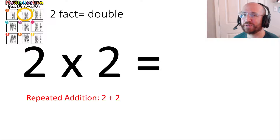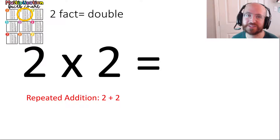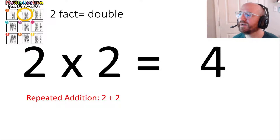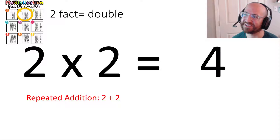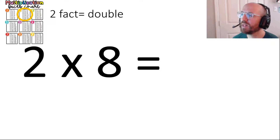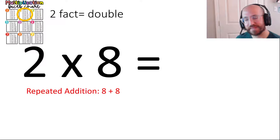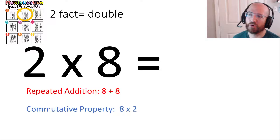Do you know two times two? This is maybe the first one that you learned, and you just confused it with addition, because it's also two plus two. Two groups of two is two plus two, and that's four. That's a fact I'm sure a lot of you already know - you even knew it in first grade, you just thought it was addition.